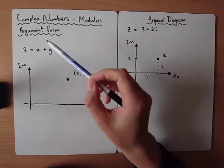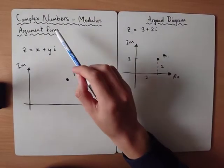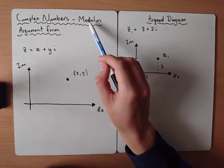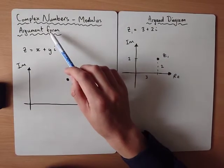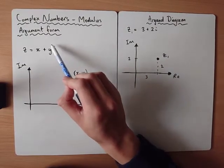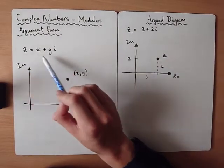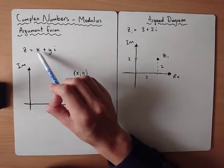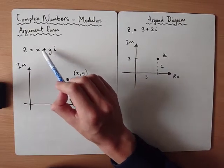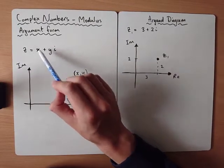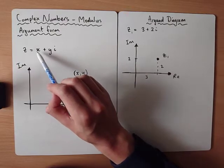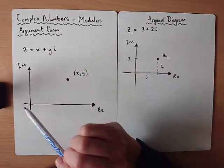In this video we're going to take a look at a new way to represent complex numbers, which is called the modulus argument form. We should already be familiar with the Cartesian form, which is the x plus yi form — where x is the real part and yi is the imaginary part.